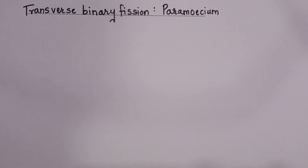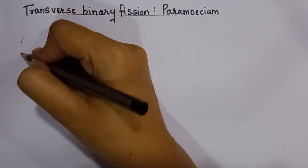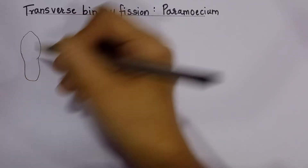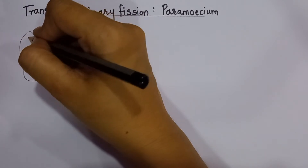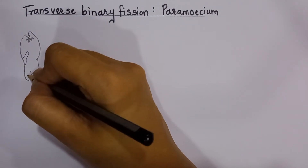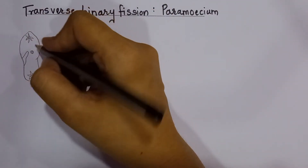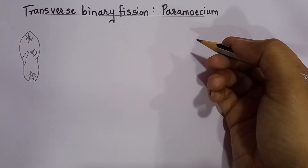Let's draw one more diagram — transverse binary fission in Paramecium. There are five parts to draw. The very first part is a structure which looks like a sandal — a sandal-like structure. We'll also draw one flower-like structure. We're not labeling all the detail parts of Paramecium, but we'll use a few key features for drawing the diagram.